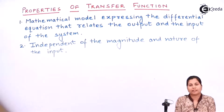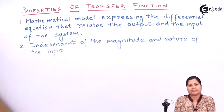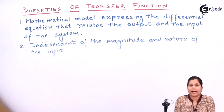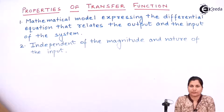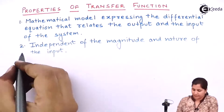The second property of the transfer function is that the transfer function is independent of the magnitude and the nature of the input. Whatever be the magnitude of the input, whether it is 10, 20, or 30, it does not affect the transfer function of the system. And the nature of the input also does not affect the transfer function.